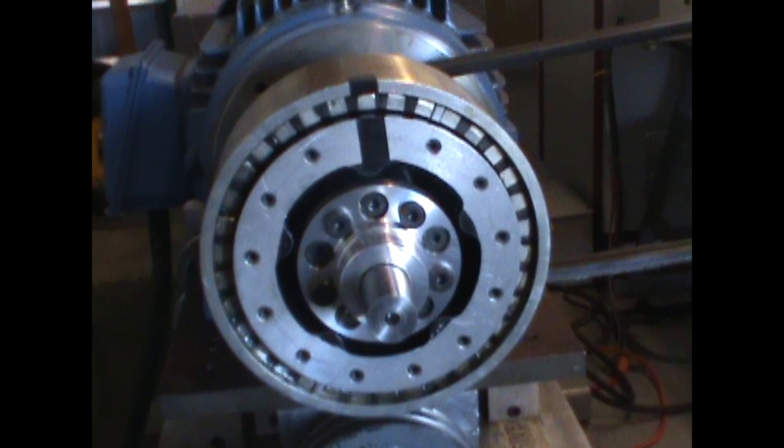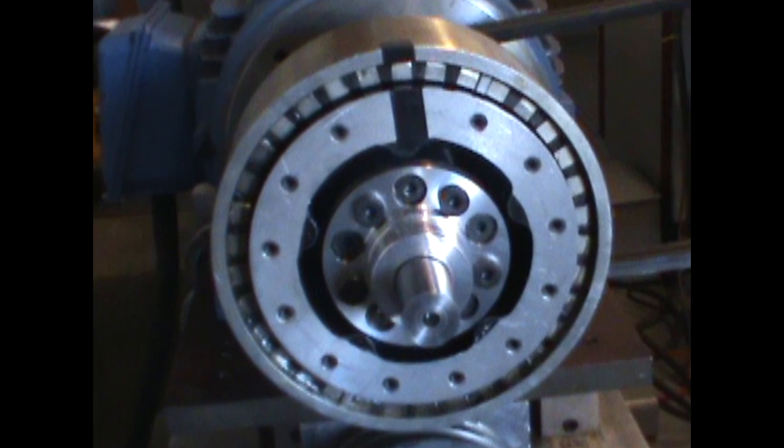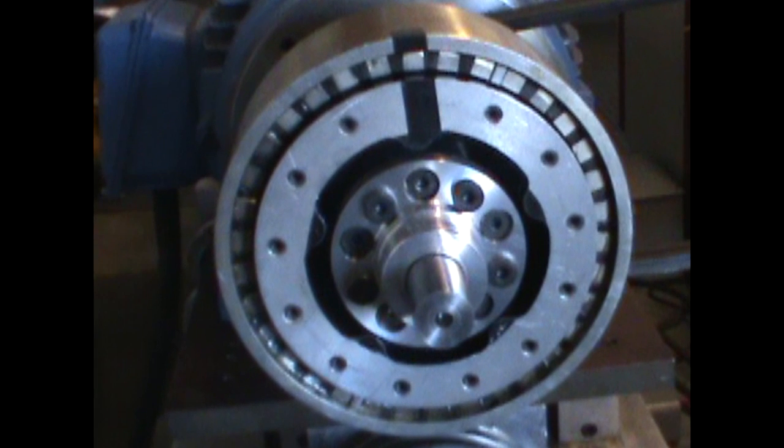In this video of the flux drive, the actuation mechanism has been removed to expose the internal rotor and magnet can. The induction rotor rotates on the shaft assembly on two sets of linear bearings. This allows the induction rotor to be actuated in and out of the magnet can.